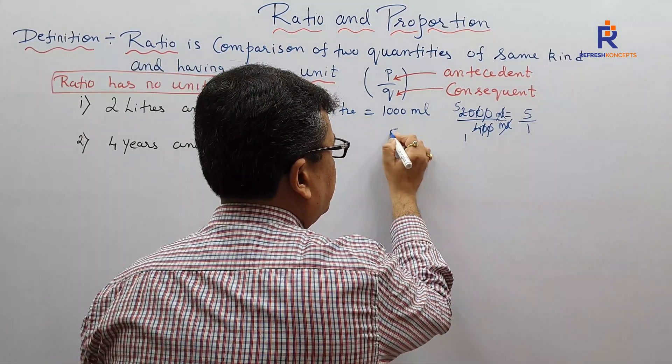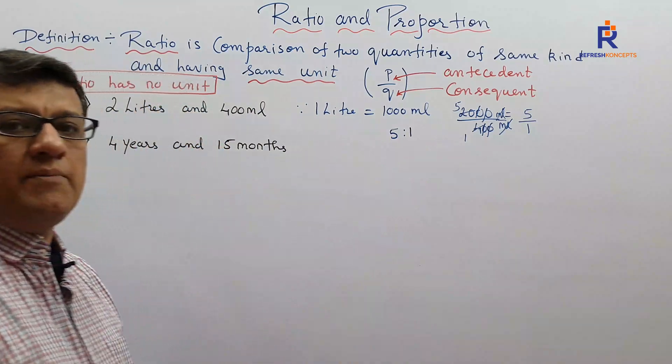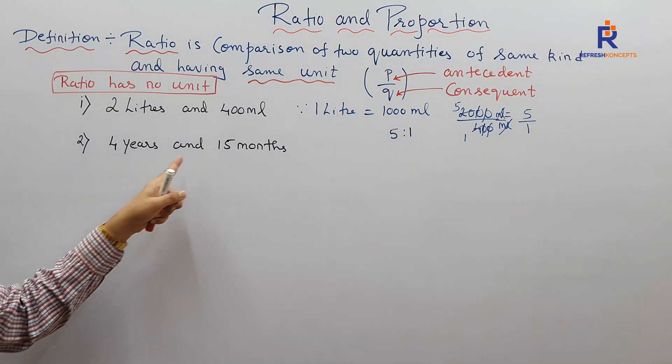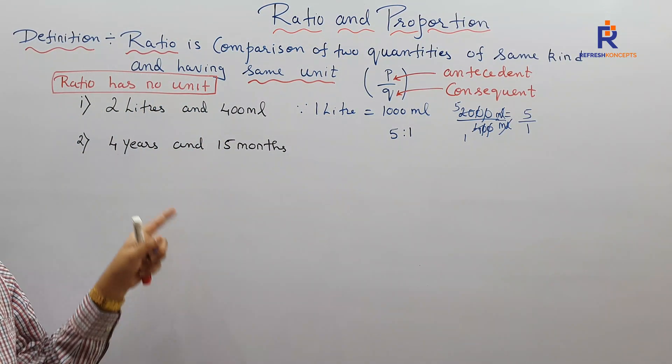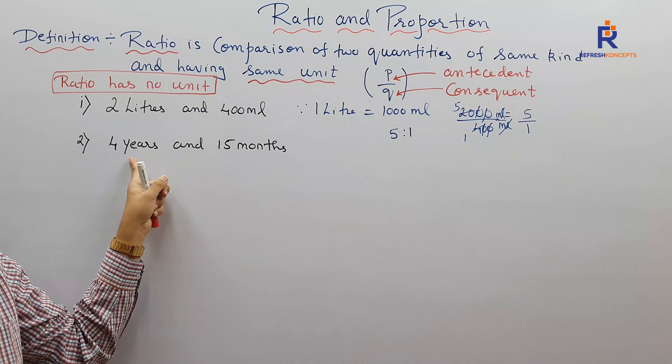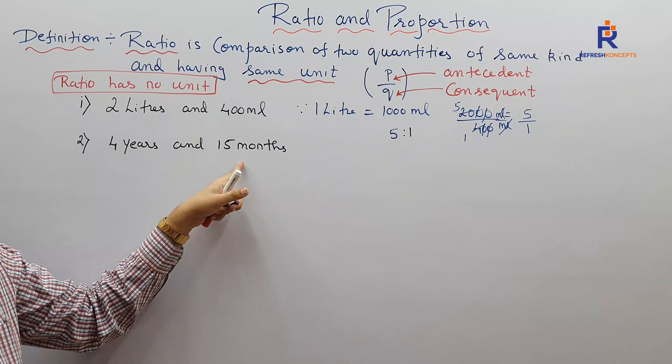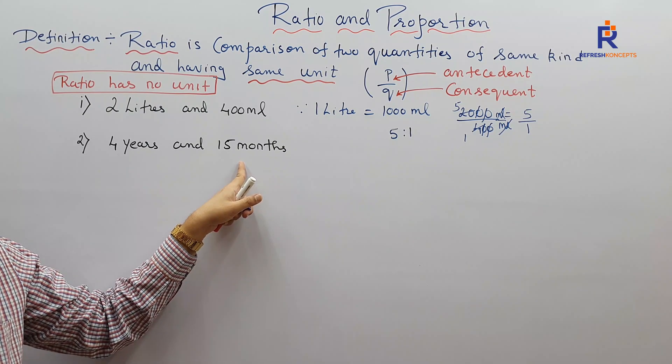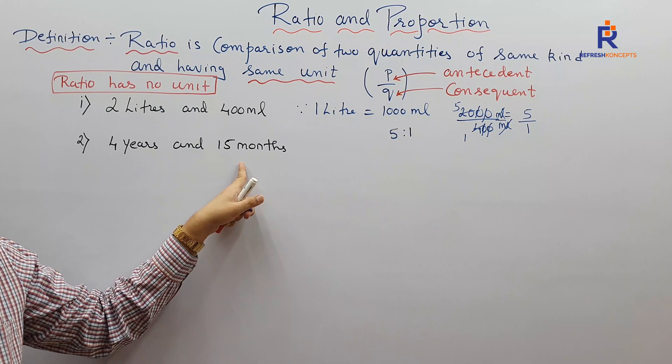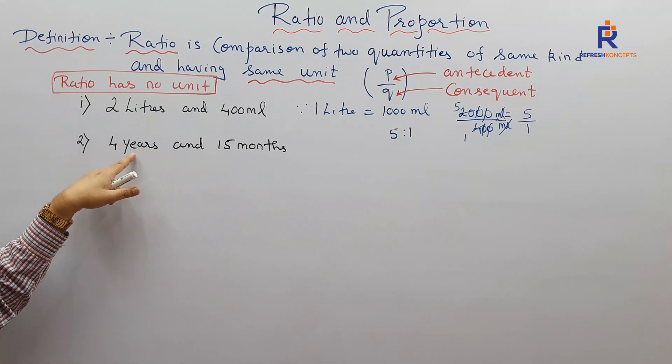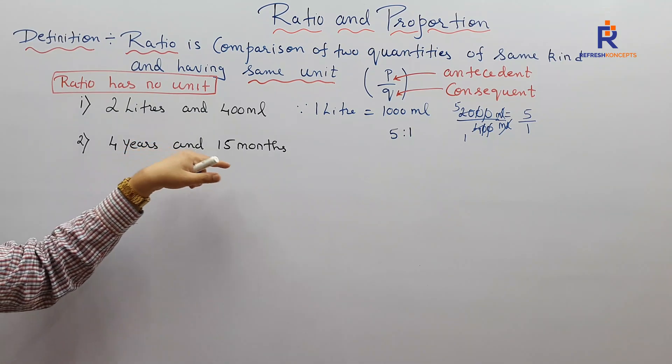How about the second one? Four years and 15 months. Either convert four years into months or 15 months into years. What is feasible? There are many who might say convert this 15 months into years, yes you can. But it's better to convert a higher order to a lower one.